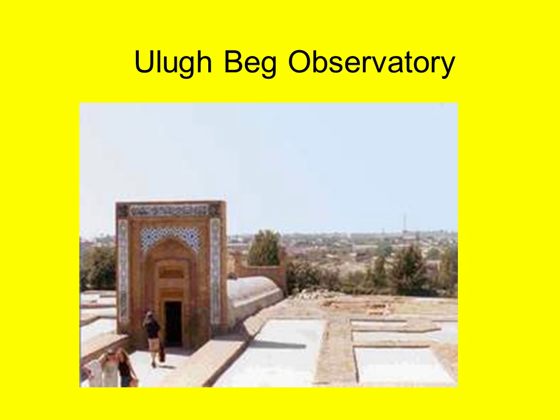Here we have an image of the Ulugbeg Observatory, built in 1428–1429. The observatory is about 130 feet in diameter and approximately 100 feet in height. In the main hall were instruments positioned for observations of the sun, the moon, the planets, and the stars. Interestingly, Ulugbeg calculated the length of the tropical year more accurately than Copernicus, and he also estimated the Earth's axial tilt at 23½ degrees, which remains the most precise historical measurement of the Earth's tilt and corresponds exactly to the figure used by scientists today.